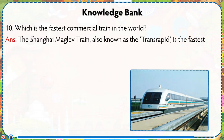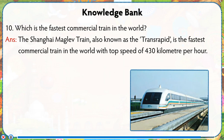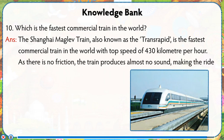Which is the fastest commercial train in the world? The Shanghai Maglev train, also known as the Transrapid, is the fastest commercial train in the world, with a top speed of 430 km per hour. As there is no friction, the train produces almost no sound, making the ride very smooth for the passengers.